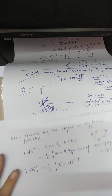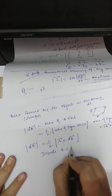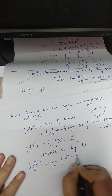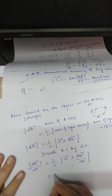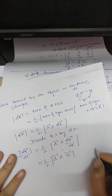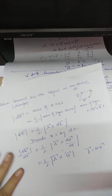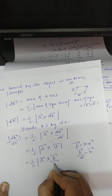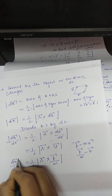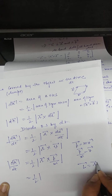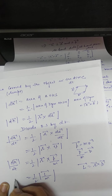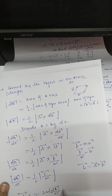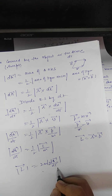Dividing both sides by dt gives dA/dt = ½|r × (dr/dt)| = ½|r × v|. Since v = p/m, this becomes dA/dt = ½|r × p|/m = L/(2m). Therefore, L = 2m × (dA/dt) — the magnitude of angular momentum equals twice the mass multiplied by the aerial velocity.